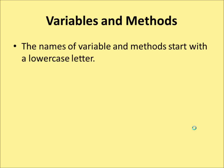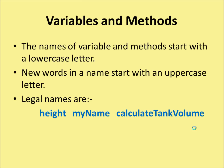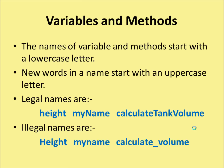For variables and methods, the name must start with a lowercase letter. New words within the name start with an uppercase letter — this is known as camelCase. For example, a legal name might be 'height'. 'myName' is made up of two words, so we start the second word with a capital N. 'calculateTankVolume' has three words, so the first is lowercase and then capital T and capital V for the other two. Illegal names would be 'Height' with a capital H, 'myname' all lowercase, or 'calculate_volume' with an underscore.